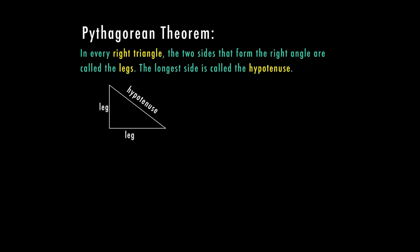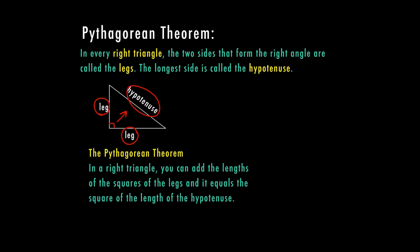In every right triangle, the two sides that form the right angle are called your legs. And then the longest side, which is opposite of your right angle, is called the hypotenuse. In the Pythagorean Theorem, it says that in a right triangle, you can add the lengths of the squares of the legs, and it equals the square of the length of the hypotenuse. So we're going to call the legs A and B, and the hypotenuse we're going to call C. So our formula is a² + b² = c².